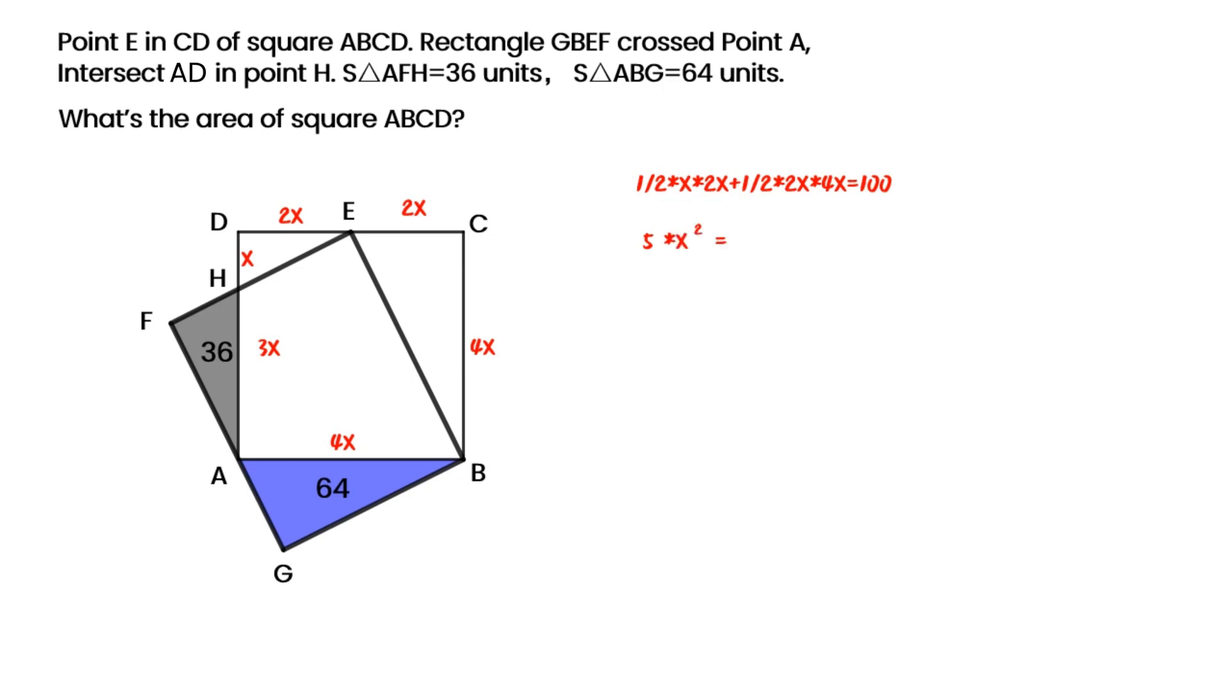After simplified, we get X squared is equal to 20. The area of square ABCD is equal to 4 times X squared, equals to 16 times X squared, is 16 times 20. We get the final result as 320 units.